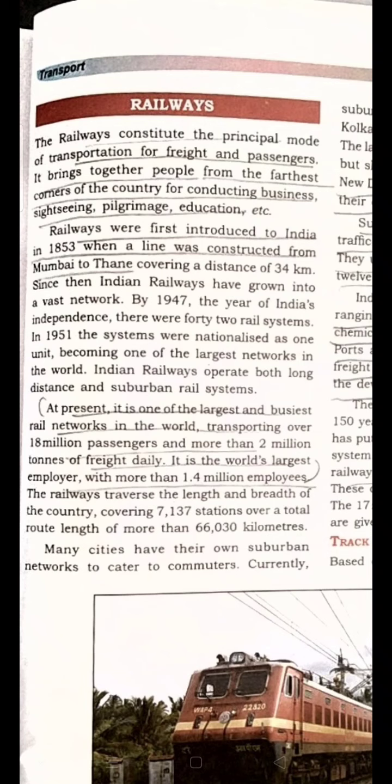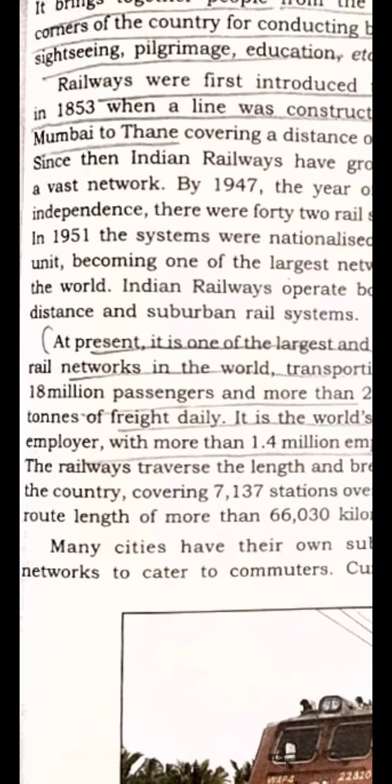Railways were first introduced into India in the year 1853, when a line was constructed from Mumbai to Thane. Please underline this. At present, it is the largest and the busiest rail network in the world, transporting over 18 million passengers and more than 2 million tons of freight daily. It is the world's largest employer with more than 1.4 million employees.